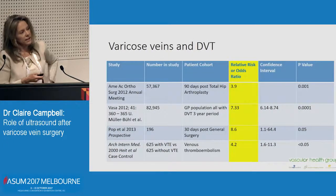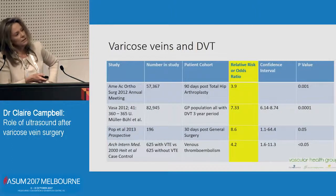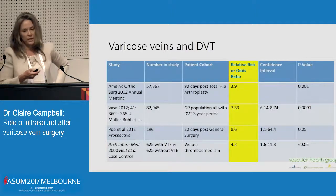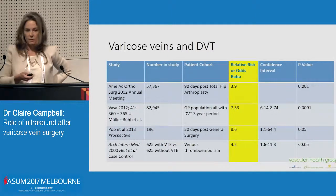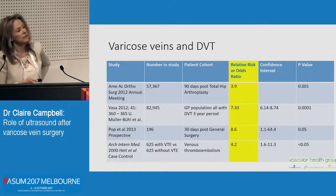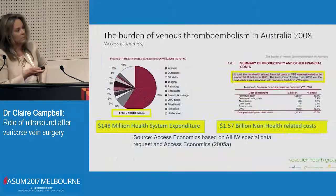If you've got a blocked deep system you can get secondary varicose veins. This is a slide looking at the chance of getting a DVT if you've got varicose veins — it's between four and nearly nine times higher than normal, all with significant p-values. So just treating patients with C4, 5 and 6, I think we probably should be treating patients with lower grades of venous insufficiency, because I think we're underestimating the true problem with thrombosis.